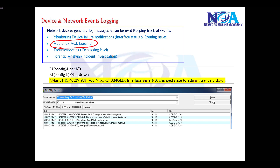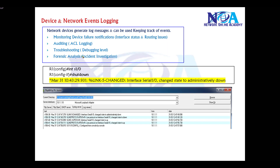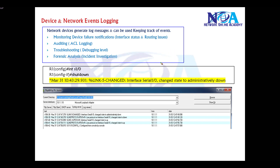You can also use log messages for auditing — for example, you can configure an ACL on a router to match specific traffic and tell the router to generate log messages if any traffic matches that pattern. This can also be used for troubleshooting — let's say you have an issue on the router, maybe the neighborship goes down, the neighborship is flapping, or a VPN is not coming up.